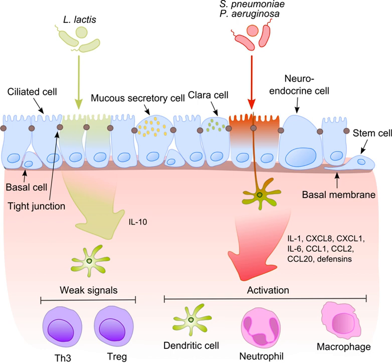Epithelial cells are equipped with very sensitive recognition tools: toll-like receptors, nucleotide-binding oligomerization domain-like receptors, and retinoic acid-inducible gene RIG-like receptors, which recognize a broad variety of microbial structural components. After recognition of pathogenic bacteria, pro-inflammatory pathways are activated and cellular components of the adaptive and innate immunity are recruited to the infection site. One key regulator in this process is NF-κB, which translocates from the cytoplasm into the nucleus and activates pro-inflammatory genes in epithelial cells and macrophages.